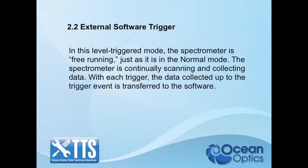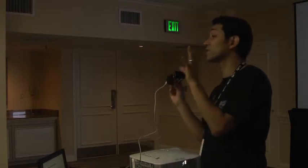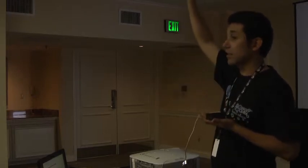The software trigger is a level trigger. As long as you provide five volts, it's going to keep acquiring and updating the spectra on the screen. In the background, the spectrometer is running in free-running mode, acquiring at whatever integration time you set in software. When you send the five-volt TTL signal, it will update the screen with the current acquisition in the spectrometer suite. This is not synchronization — it's simply: every time I send you five volts, update the screen.